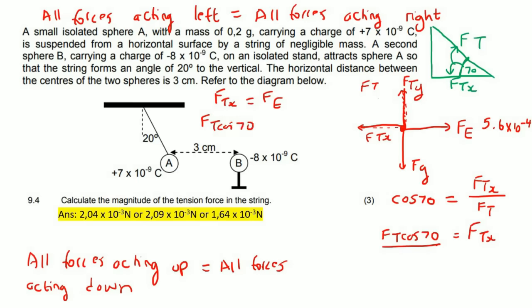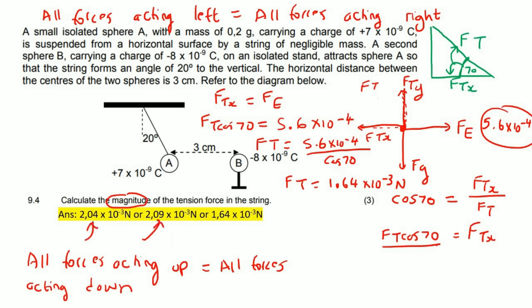So what we can then do is say FT cos 70, because that's what FTX was, right? That's what we said over here. And we can make that equal to FE, which we calculated earlier as 5.6 times 10 to the negative 4. Then, to get the tension force by itself, I can just say 5.6 times 10 to the negative 4 divided by cos 70, and that's going to give us a tension force of 1.64 times 10 to the negative 3 newtons. And I don't need to give a direction because they just said magnitude. So to get these answers, there's obviously different ways we could have done this question. You could have maybe said that the tension force in the y must be the same as gravity. That would have also worked but it might have given you a different answer. So there we have it.